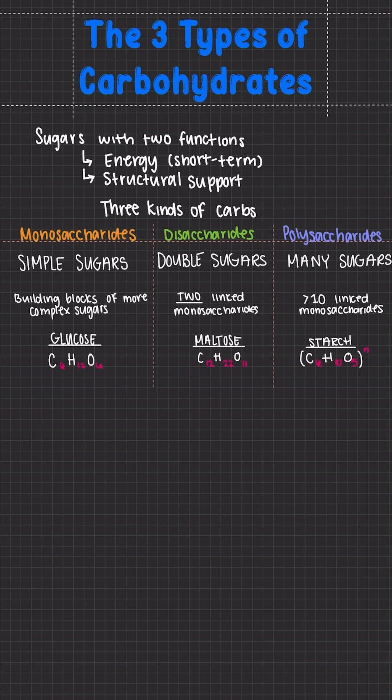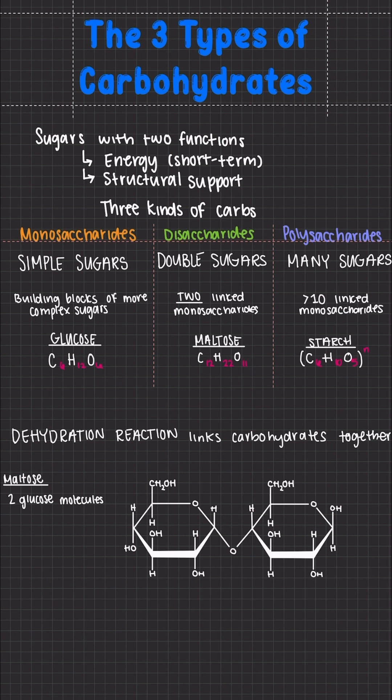But how are they all connected? No matter the type, all carbohydrates form through a dehydration reaction and they're held together by glycosidic linkages. These different glycosidic bonds form different structures, which means our carbohydrates have different functions.